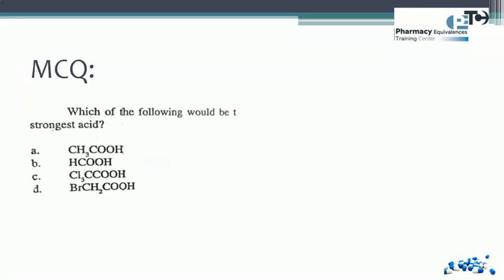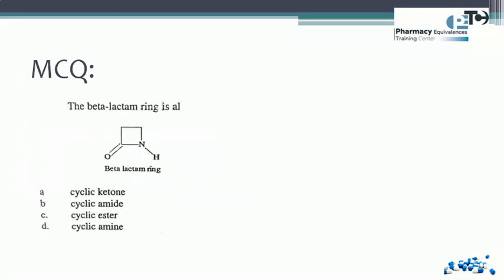Question 2: which of the following would be the strongest acid? We compare four choices. Choice A is acetic acid (CH3COOH) and choice B is formic acid (HCOOH). Since the CH3 group decreases acidity, formic acid (B) is more acidic than acetic acid (A). Choice C has three chloride atoms attached to the carbon adjacent to COOH, which greatly increases acidity — making choice C the strongest acid and the correct answer.